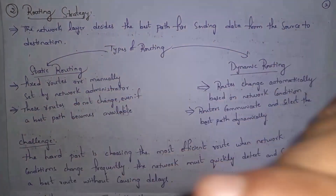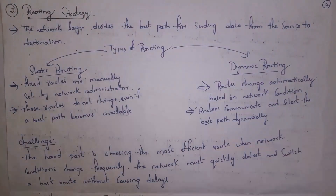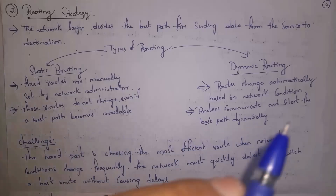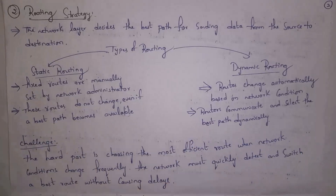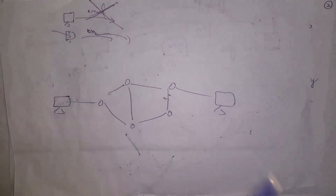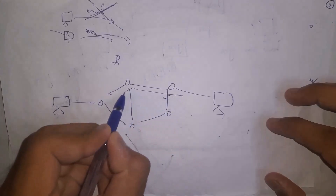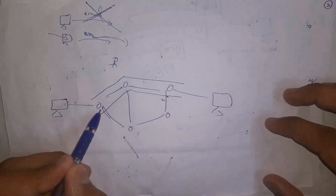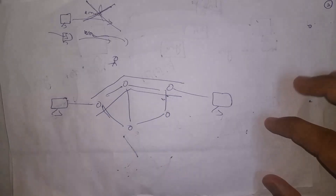The second design issue is routing strategy. When one computer wants to send data to another computer, the network layer identifies the best path, and using that best path data is transferred from sender to receiver. Routing is classified into two types: static routing and dynamic routing. In static routing, the network administrator sets the route manually — even if a better path is available, the route will not change. For example, the administrator sets one fixed path and the two devices communicate only through that path.